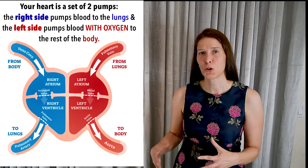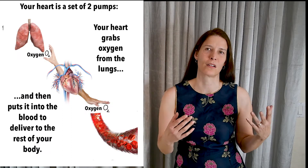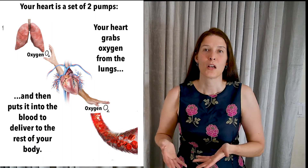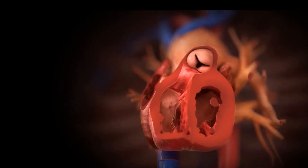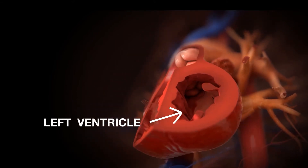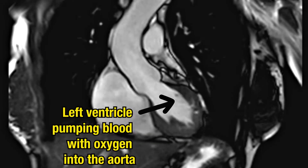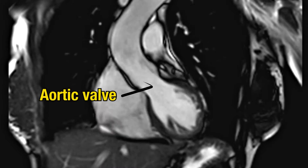Your heart is essentially a set of two muscular pumps. The right side of the heart gets oxygen from the lungs, and the left side of the heart gives oxygen to the rest of the body. Your heart uses blood as the transport medium for oxygen. When your heart pump fails, the rest of your body is unable to get the oxygen that it needs. Your heart is made up of four chambers and is wrapped in several layers of muscle. Perhaps the most important chamber is the left ventricle, which is responsible for taking the blood with oxygen from the lungs and pumping it to the rest of your body.